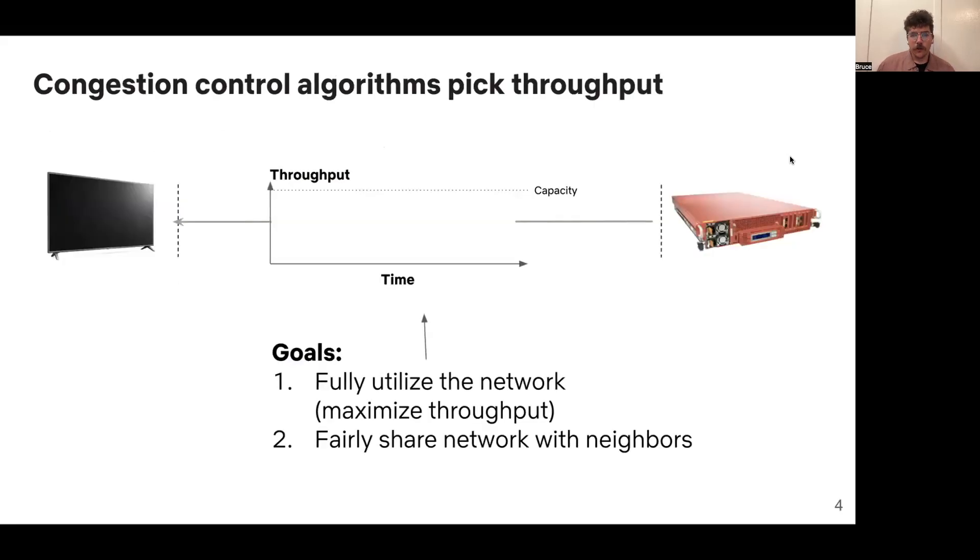But when we think about how to make video traffic friendlier, it's not really clear how we can do that. This is because we think about things like friendliness as the domain of congestion control algorithms, which pick the throughput for video. So we have our server sending data to our client by picking an instantaneous throughput with goals to fully utilize the network, to send as quickly as possible, and to fairly share the network with neighbors.